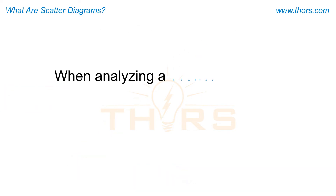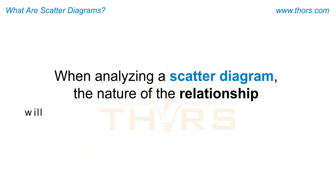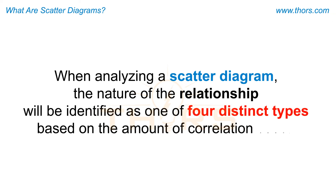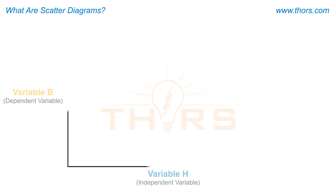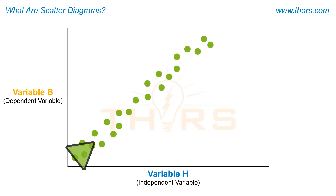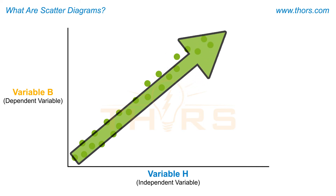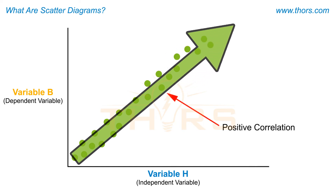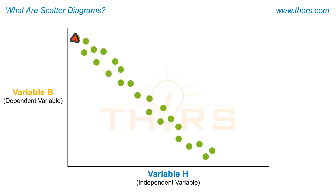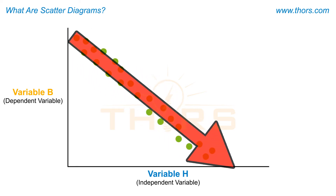When analyzing a scatter diagram, the nature of the relationship will be identified as one of four distinct types based on the amount of correlation seen. When the dependent variable increases linearly with an increase in the independent variable, such that the data clearly exhibits the shape of a line trending upward, then the relationship is said to have a positive correlation. When the dependent variable decreases linearly with an increase in the independent variable, such that the data clearly exhibits the shape of a line trending downward, then the relationship is said to have a negative correlation.